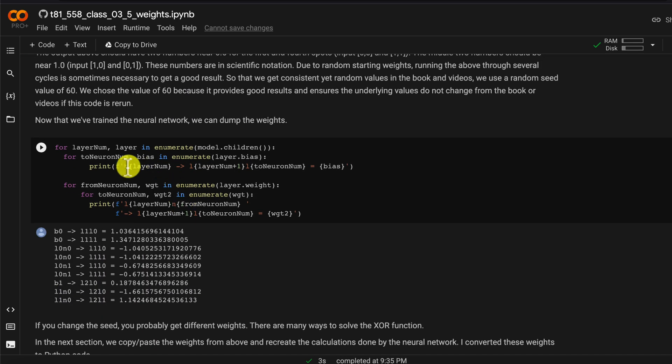So PyTorch gives you a number of functions that you can make use of to probe into the neural network. We are making use of the model children which is going to return the actual layers. We're enumerating it so that we have the layer number as well and then we get access to the actual neurons and bias neurons which are handled separately and we simply print out the values for the biases and the values for the weights.